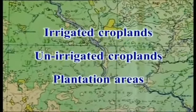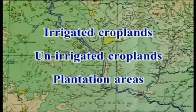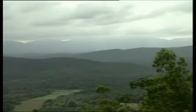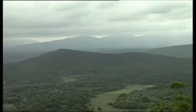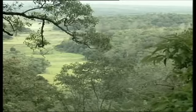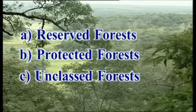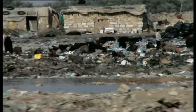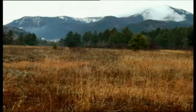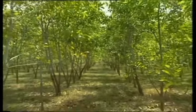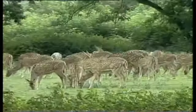Agricultural land includes irrigated croplands, unirrigated croplands, and plantation areas. Forests are central to all human activities because they provide a diverse range of products and resources. Forest areas are classified into reserved forest, protected forest, and unclassed forest, as well as village forests and wastelands or rangelands. Forest lands are notified by the government to develop, protect, and conserve forest resources including wildlife.